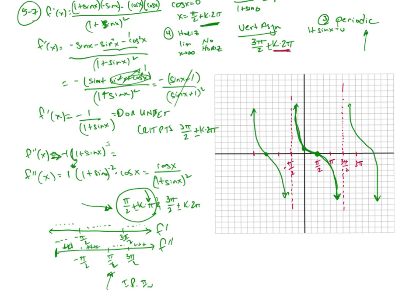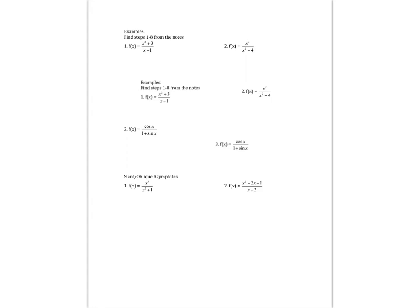A lot of times when you see these problems, they will bound them — they'll say only look at it from negative 2 pi to positive 2 pi and graph that, which makes it a lot easier. So we did three examples. We'll do a couple more in class. Thanks for watching — hit that like and subscribe button. I know this was a lot to take in and I went pretty fast, so you might have to pause and rewind. Hit that like and subscribe button, and I'll see you guys in the next video.